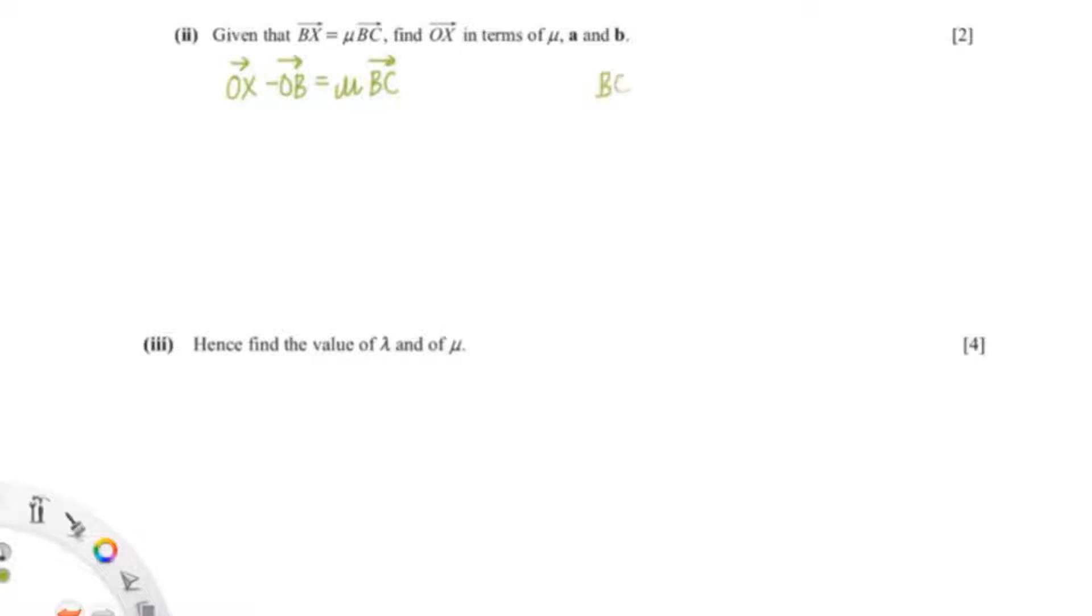So now let's find BC. In the question BX equals to BO plus OC, and BO would be negative 2B and OC is plus 3A. So now OX equals to mu BX plus OB.